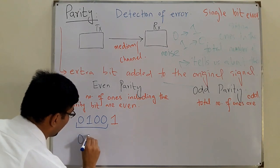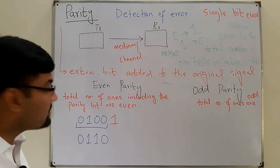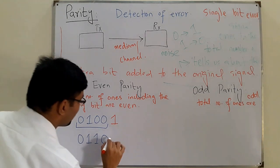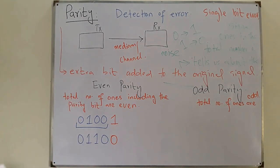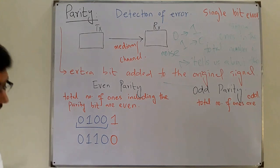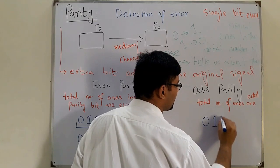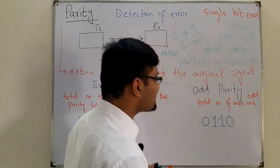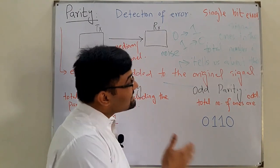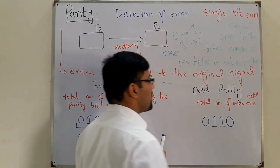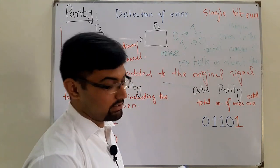If you have 0110 as the original signal and want even parity, the total number of ones is already even, so the parity bit is low — zero. For odd parity with 0110, you need the total number of ones to be odd, so you set the parity bit to one.